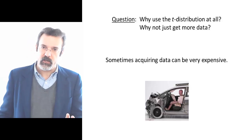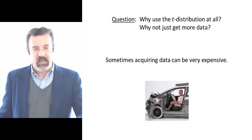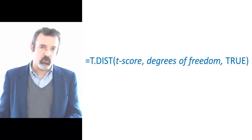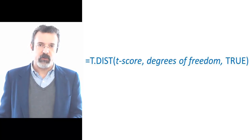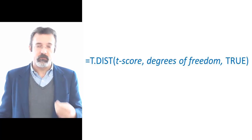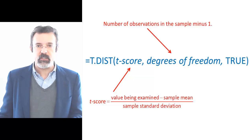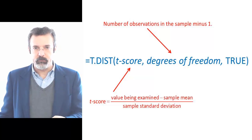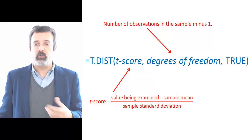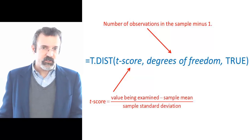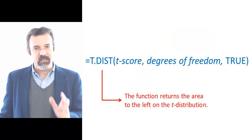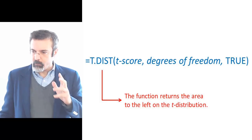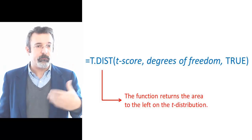Instead, we'll collect a few observations, and rather than using the normal distribution to answer questions about the random variable, we'll use the T distribution. To find the value under the T distribution in Excel, use the t.dist function. t.dist takes three arguments: the first is the T score, the second is the degrees of freedom, and the third is the word true. The T score is the value we are examining minus the sample mean, divided by the sample standard deviation. The degrees of freedom is the number of observations minus one. The t.dist function returns the area under the T distribution to the left of the value we're examining.